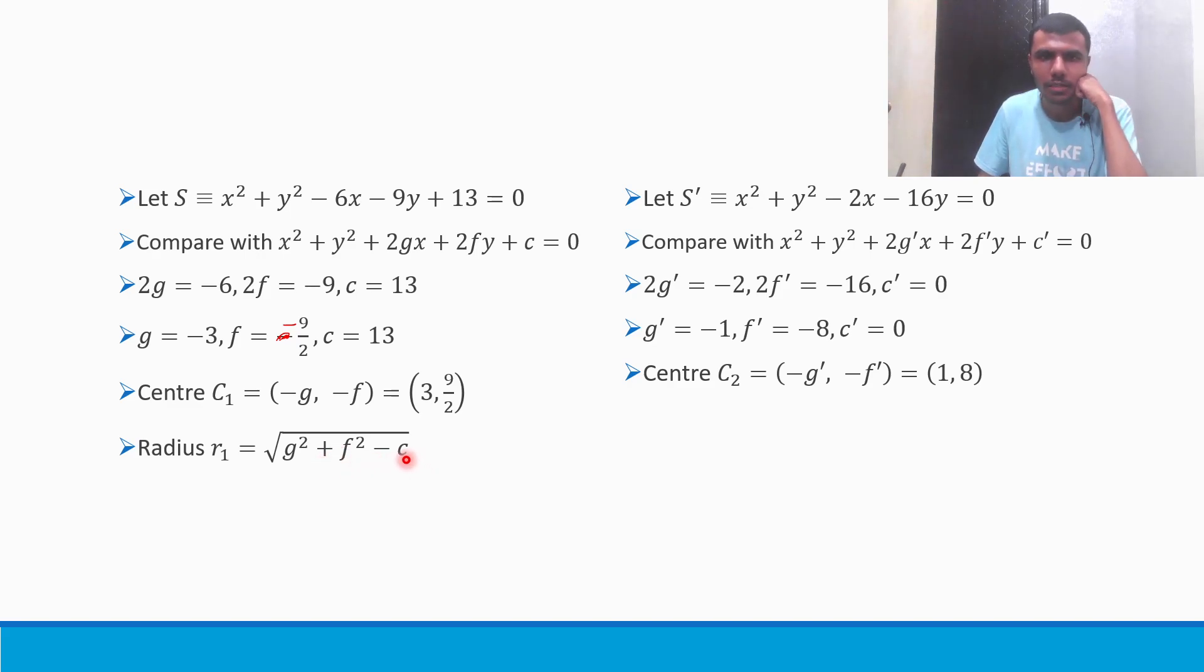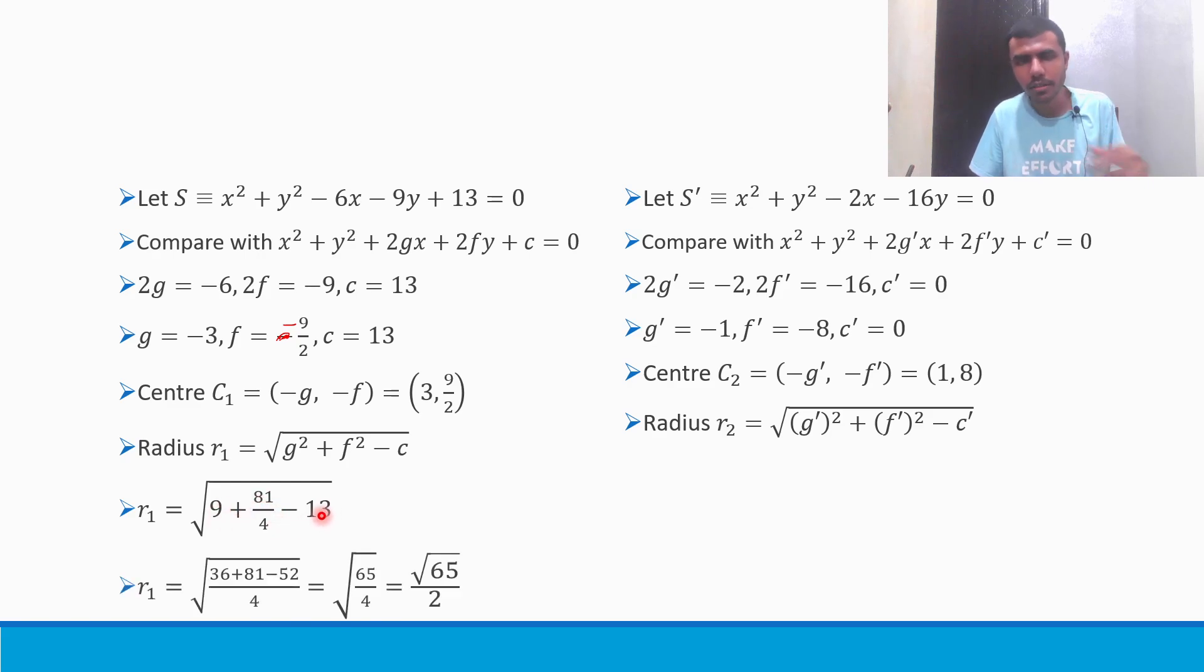Now radius. Radius r1 is under root g square plus f square minus c. So under root 9 plus f square is 81 by 4, minus 13. Take LCM guys. So 36 plus 81 minus 52 is 65, so it's root 65 by 4 which is root 65 by 2. Next r2 is under root 1 square plus 8 square minus 0, so r2 is root 65. We got center and radius.